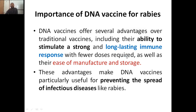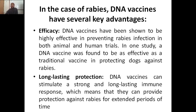DNA vaccines offer several important advantages. First, efficacy — they are able to stimulate a strong and long-lasting immune response with fewer doses, even a small dose can be sufficient. DNA vaccines have been shown to be highly effective in preventing rabies infection in both animals and humans. In one study, the DNA vaccine was found to be as effective as a traditional vaccine in protecting dogs against rabies.